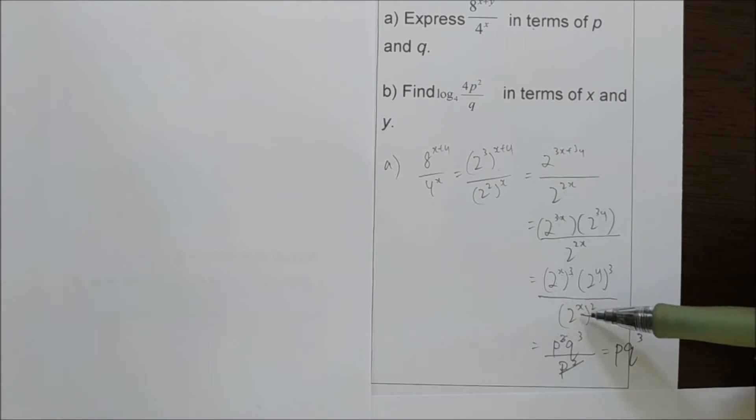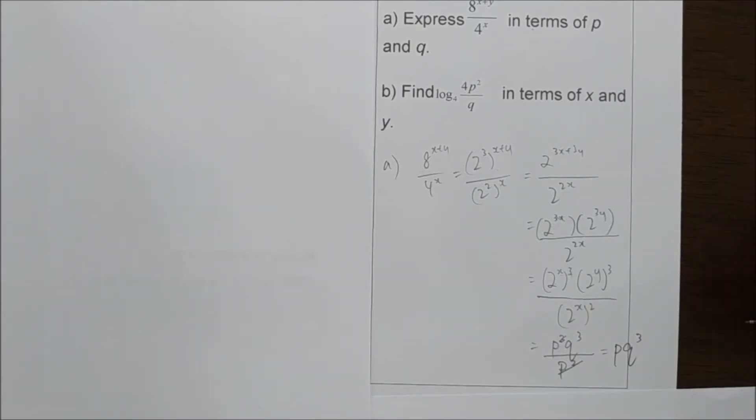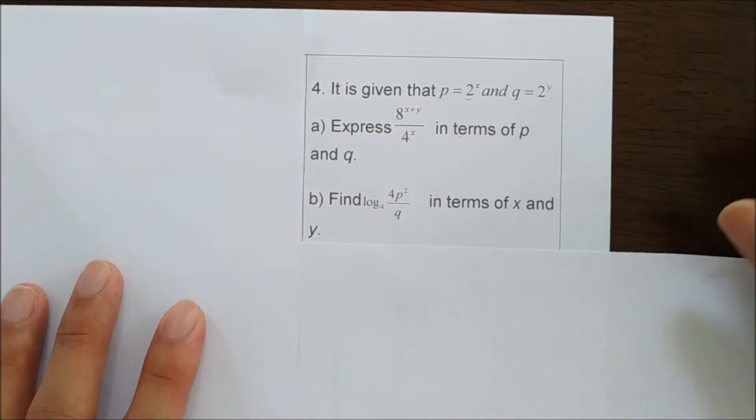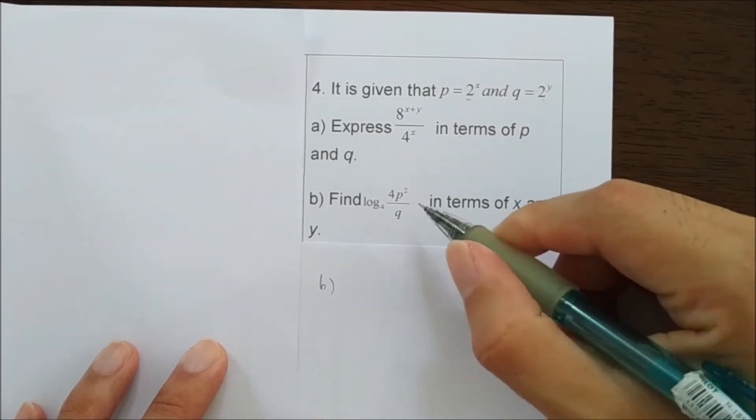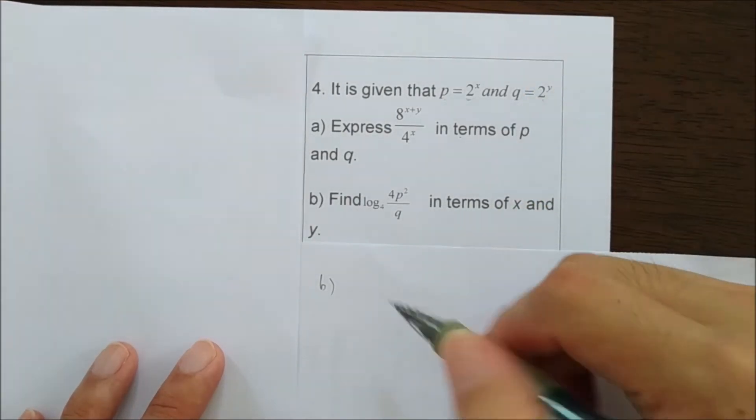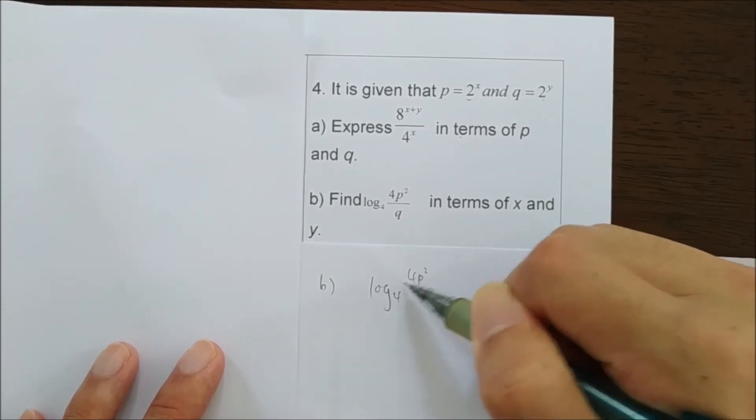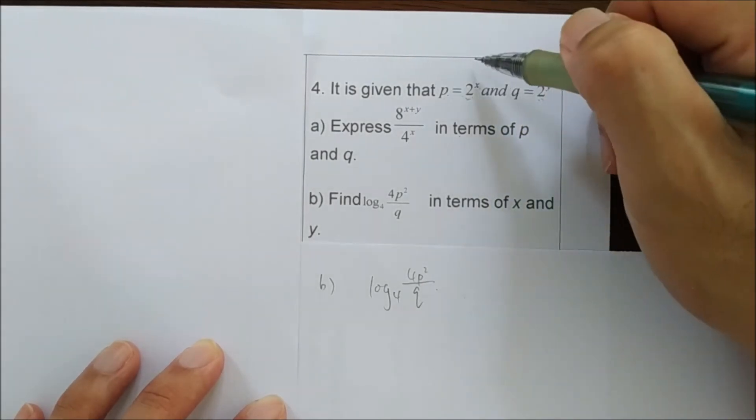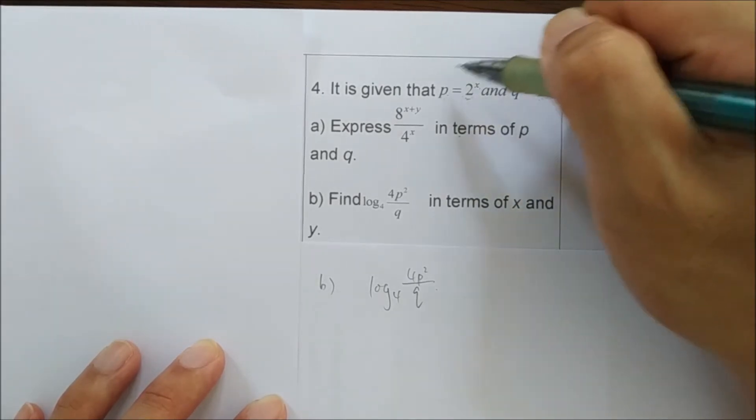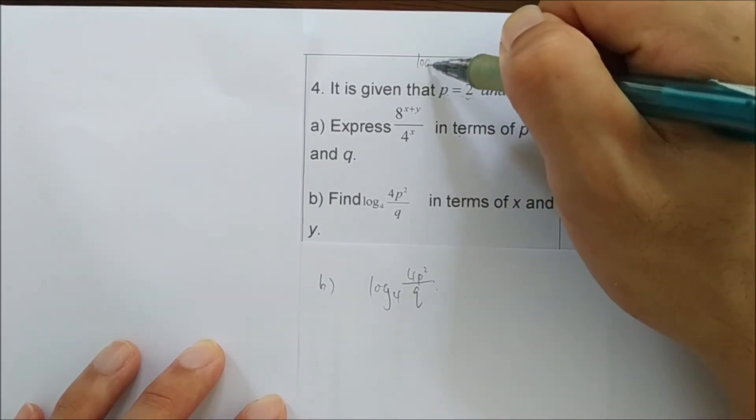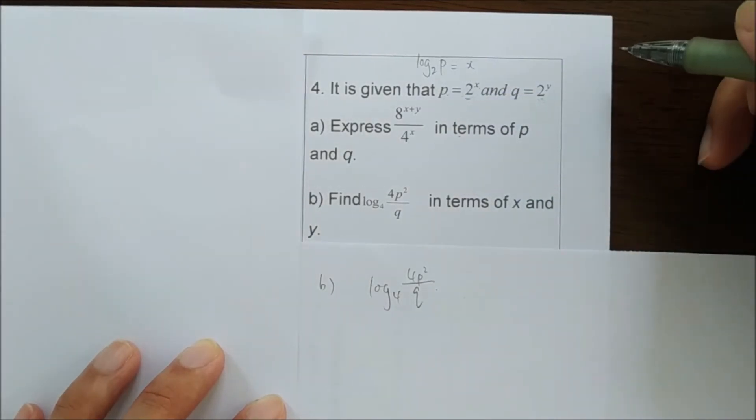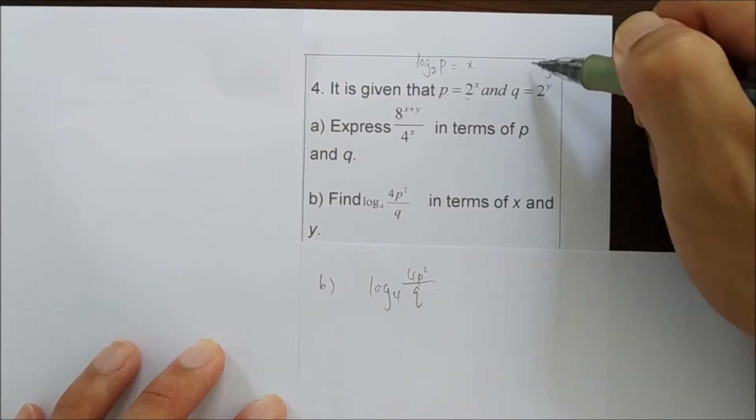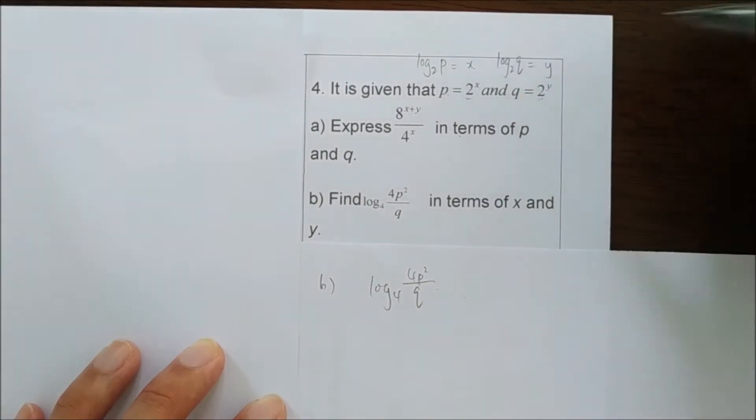So actually, if you want to simplify it here before you change it to p and q, you get the same answer. We continue with question B. For question B, find this in terms of x and y. So log base 4 of p squared over q. So you see, given p equals 2 to the power of x, according to the logarithm rule actually, x is equal to the base 2 log of p. The same applies here. So y equals the base 2 log of q.